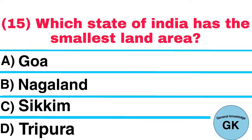Question number 15. Which state of India has the smallest land area? A. Goa, B. Nagaland, C. Sikkim, D. Tripura. Answer: Goa.